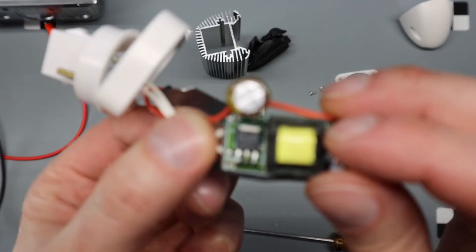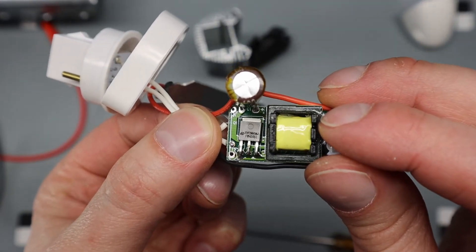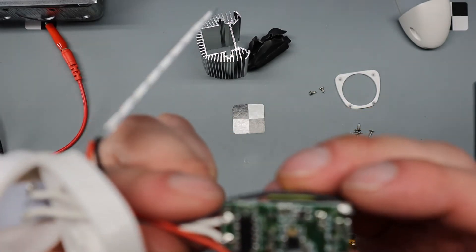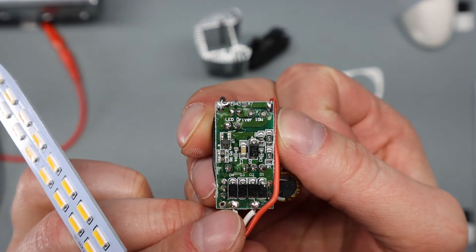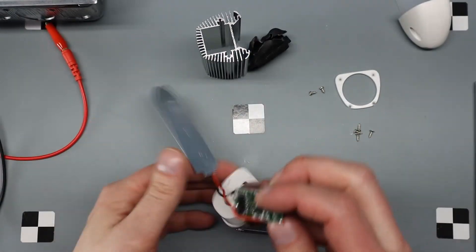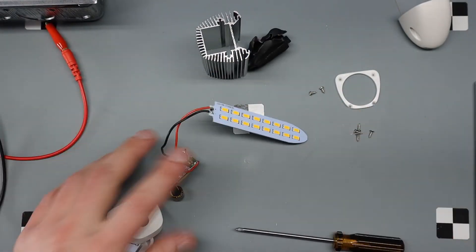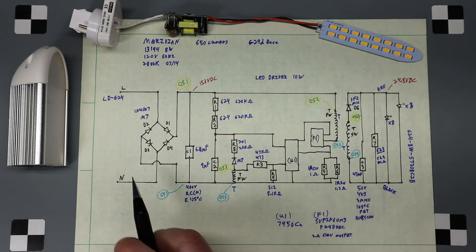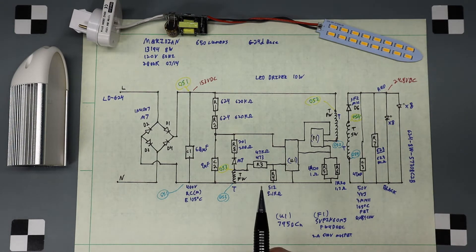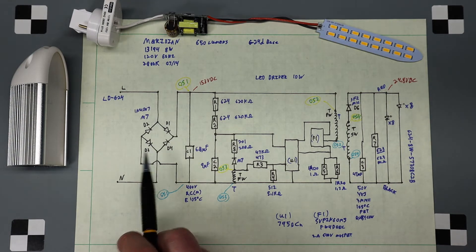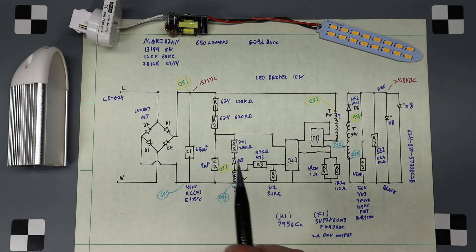All right, here's the diagram. So we've got a rectifier, a switched mode power supply, and the load. Over here we have surface mount diodes, smoothing capacitor.